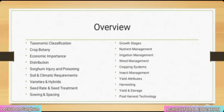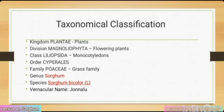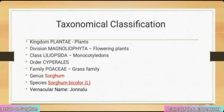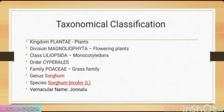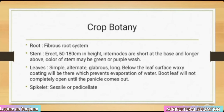Taxonomical classification: Kingdom Plantae (plants), Division Magnoliophyta (flowering plants), Class Liliopsida (monocotyledons), Order Cyperales, Family Poaceae (grass family), Genus Sorghum, Species bicolor. Vernacular name: Jowar. Crop botany — root: fibrous root system. Stem: erect, 50 to 180 centimeters in height; internodes are short at the base and longer above.